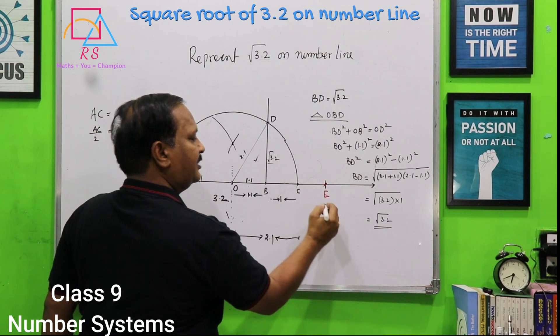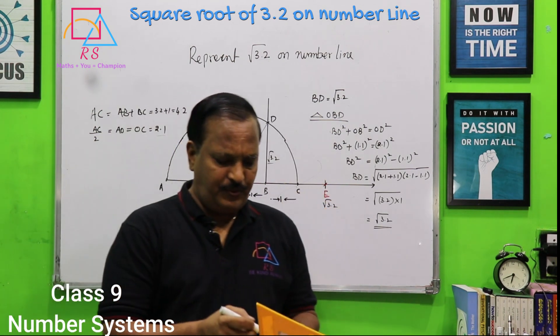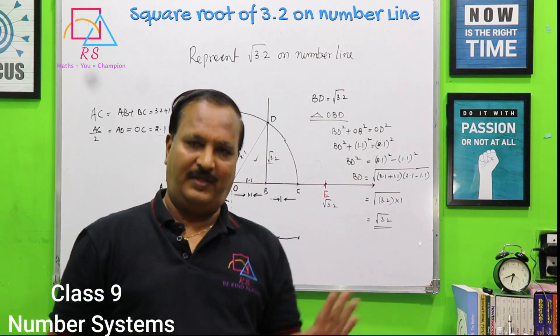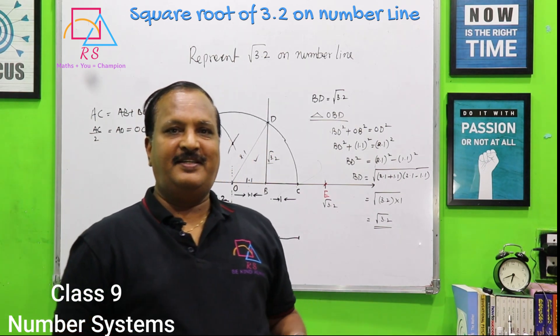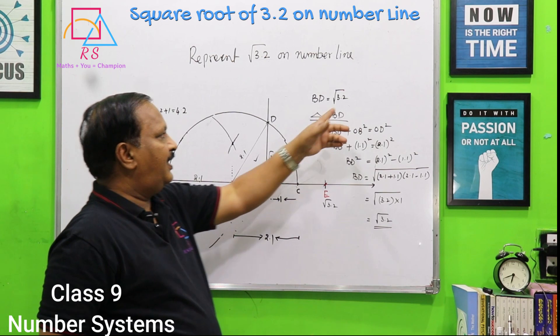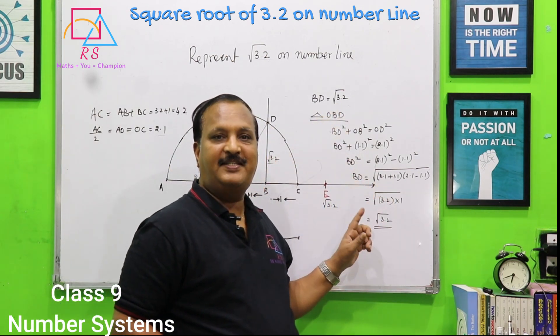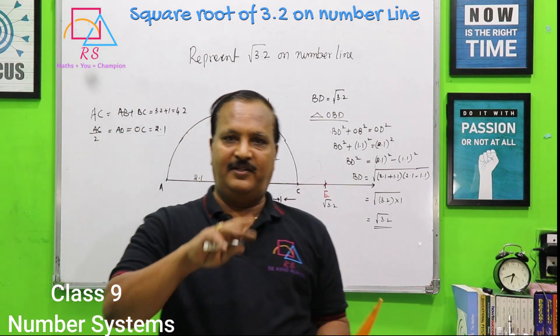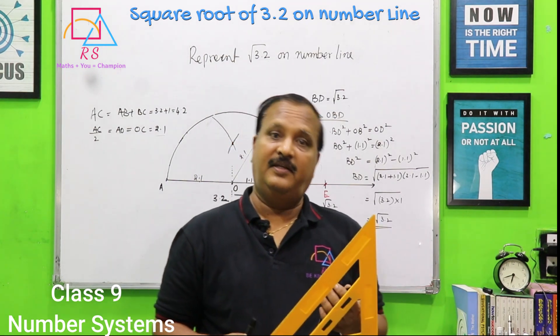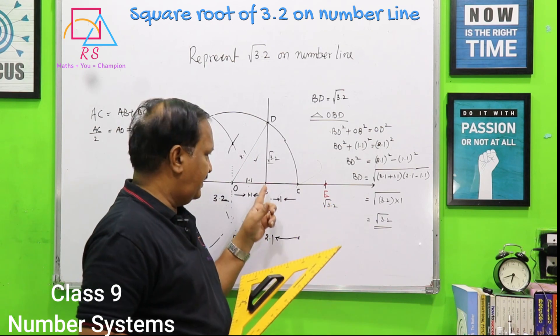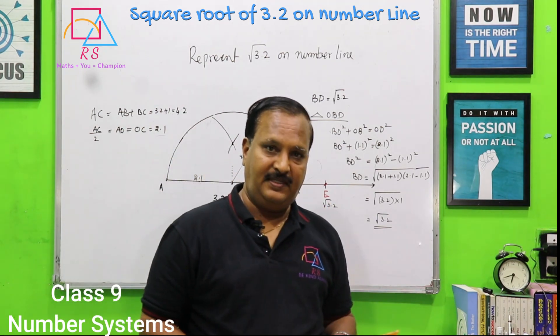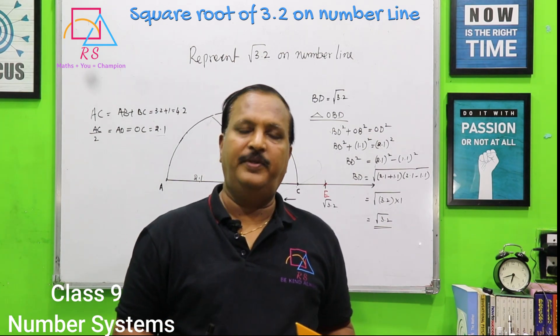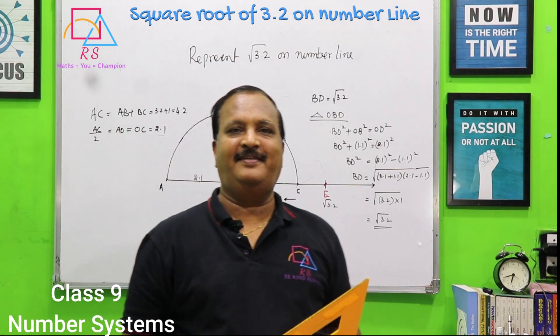So, now BD, BE we have expressed on number line. This you can do with any problem. I have given root 3.2. You can have 3.4, 2.1 whatever. I hope we have understood. Please practice this. In the textbook, how BD is root 3.2 it is not given. So, this is the proof. Construction is only important. Practice construction two to three times. You should use appropriate geometrical instruments. Thank you, have a nice day.